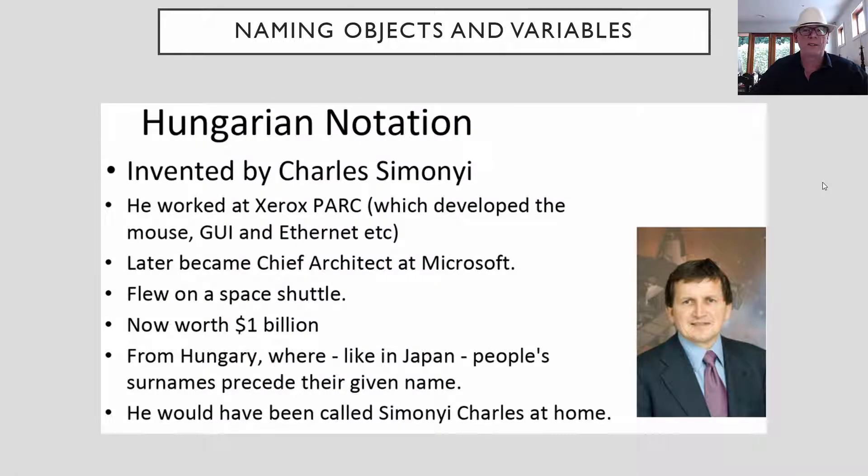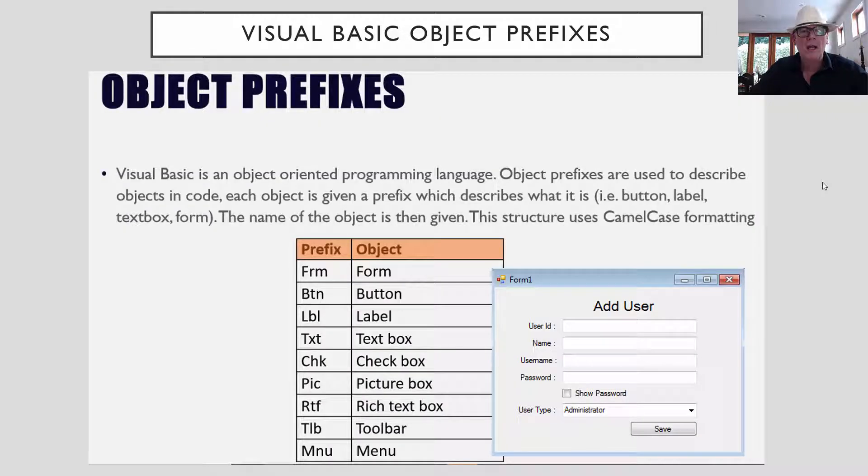It was invented by this guy, Charles Simonyi. And yeah, he was a pretty interesting guy, did a few different things, and now worth $1 billion. And he flew on a space shuttle. Wow, that's a good life. Now for objects on forms, if you've done visual basic before, this thing like user ID here on the form, this is just a label. So that would be called LBL user ID without that space in between, so that we're using Hungarian plus camel case. This text box where they enter the username, that would have a TXT in front of its name. So it might be called TXT username, so that we knew that that was coming out of the text box that was in the form, when we're down inside the program actually processing it.